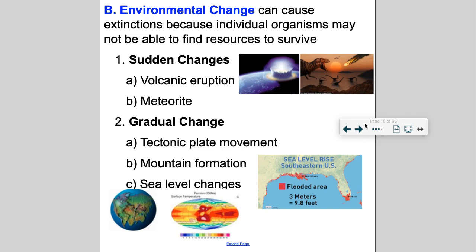Minnesota used to be on the equator — it used to be tropical islands. Every year the Atlantic Ocean gets larger and every year the Pacific Ocean gets smaller. Over time California and China or Japan will collide. San Francisco and Los Angeles will be neighbors in thousands of years from now because the plates are moving.